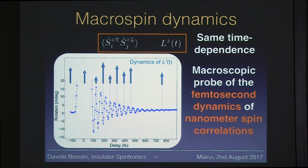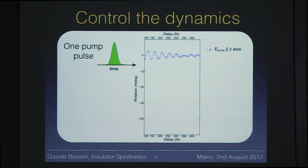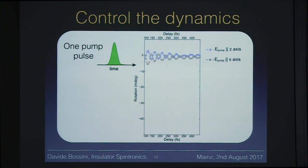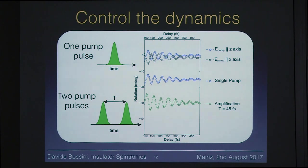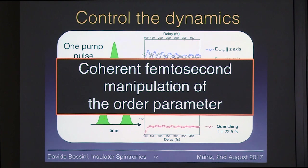We took this concept to the next level. We first excite the system with one laser pulse and observe the usual oscillations. Then we change the polarization of the pump beam and observe that the sign of the oscillation is reversed — so we can perform coherent control of the phase of the oscillations. To also manipulate the amplitude, we use a double pump-pulse excitation scheme. When the delay between the two pump pulses equals the period of the two-magnon mode, the oscillations are enhanced. When the delay equals half the period, the oscillations are suppressed. This demonstrates coherent manipulation of the macroscopic order parameter on a 10-femtosecond time scale.